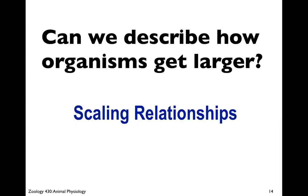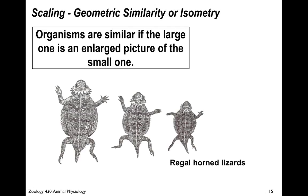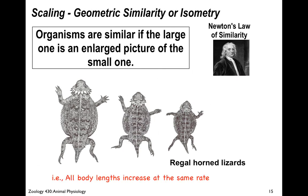Can we describe how organisms get larger? Sure — we can quantify their scaling relationships. An important concept this week is isometry versus allometry. Isometry: organisms are similar if the large one is an enlarged picture of the small one — like blowing up an image on a photocopier. This is Newton's law of similarity, and it states that all body lengths increase at the same rate, so length and width both grow at the same rate. There is no change in shape, only in size.